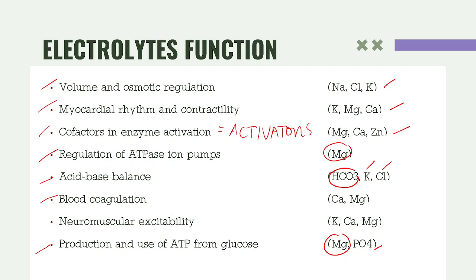For blood coagulation — which you will appreciate more during hematology 2 in topics about thrombocytes — calcium and magnesium are involved, especially calcium. For neuromuscular excitability, we have potassium, calcium, and magnesium. These are the general functions of electrolytes, which will be emphasized more deeply during lecture.